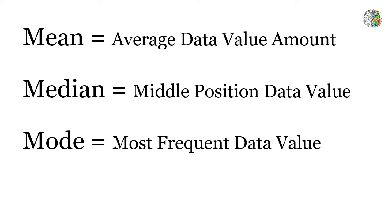The mean is the average data value amount — this is going to be the center value when you add up all of the data. The median is the middle position data value, the data value that sits in the middle of your data. And the mode is the most frequent data value, or the value that repeats the most in your experiment.